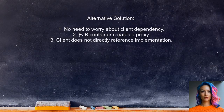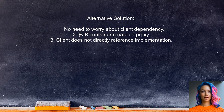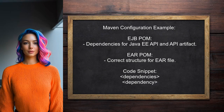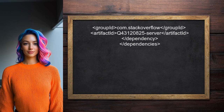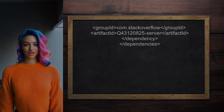A second user suggests you don't need to worry about the client's dependency on the implementation. The EJB container handles this by creating a proxy for the implementation, so the client never directly references it. They provide an example Maven configuration: the EJB POM includes dependencies for the Java EE API and the API artifact, while the EAR POM ensures the correct structure for the EAR file.